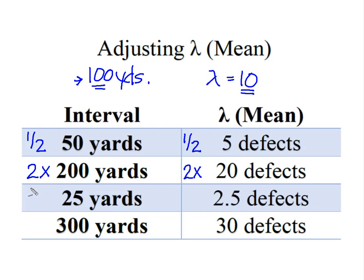I only want to look at 25 yards and that's fine. That's one quarter of an interval. So I simply take one quarter of my original mean of 10 and now I should see two and a half defects.